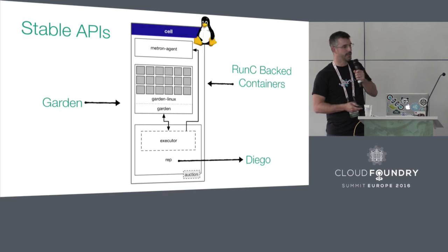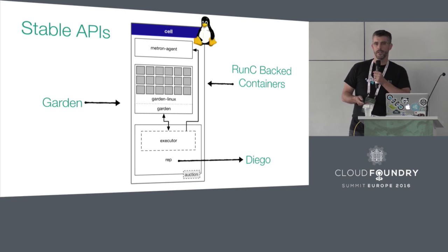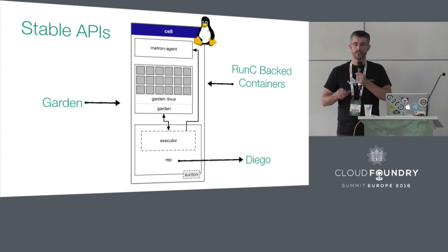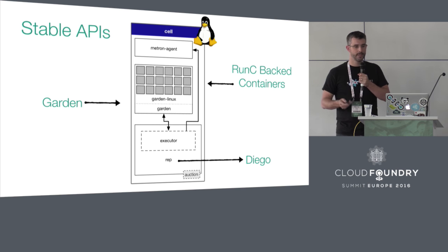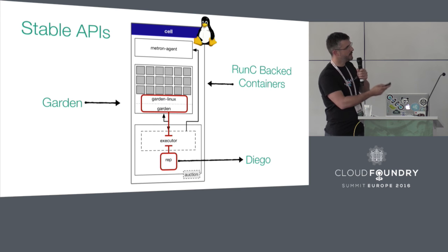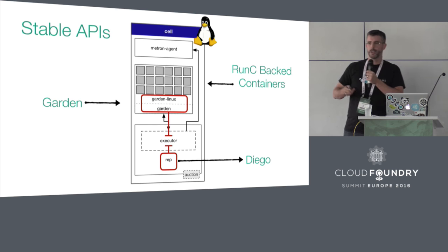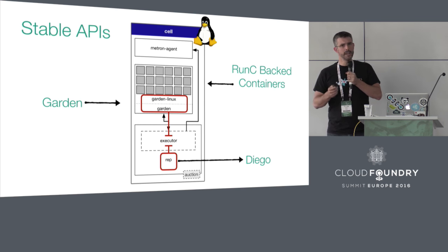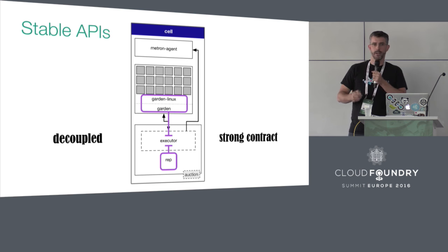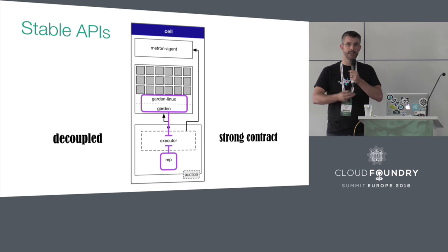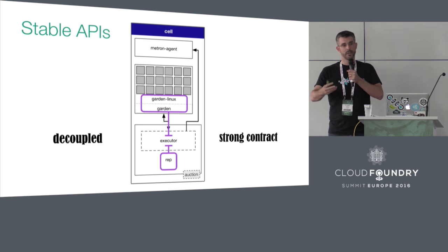A great example of stable APIs in Cloud Foundry is the cell. Applications run on cells; in Linux they run on runc-backed containers. Containers are managed by Garden, and the cell itself is managed by the rep, which talks to Diego. There's a decoupled interaction between Garden and the rep, but a strong contract between them. By keeping the Garden API stable, you can swap out the back end — it was Guardian, now it's runc. If there's a CVE, all you have to do is upgrade Garden, and we make a promise to the community that on Diego version X and above, you just redeploy Garden to get all the latest security fixes without changing any other component.